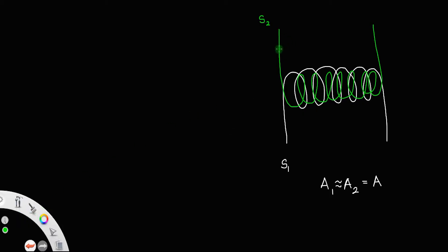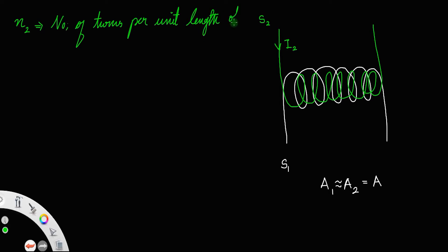Let us say a current I2 is passed through the second coil, and let N2 be the number of turns per unit length of S2, that is the outer coil. Since a current is flowing through a coil with a certain number of turns per unit length, we have the magnetic field produced by the coil: B2 is equal to μ₀ times the number of turns per unit length times the current. So for coil S2, B2 = μ₀N₂I₂.